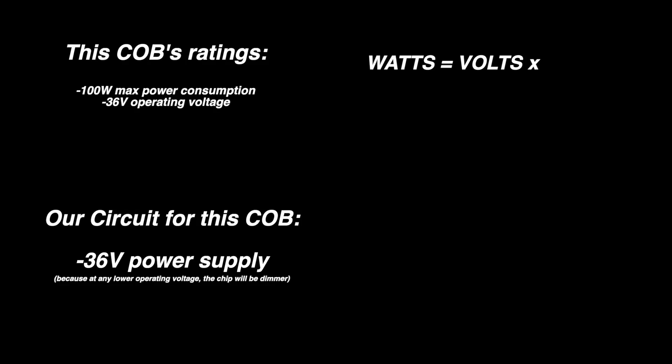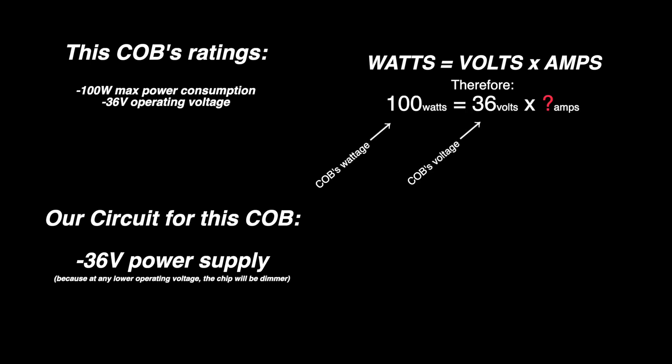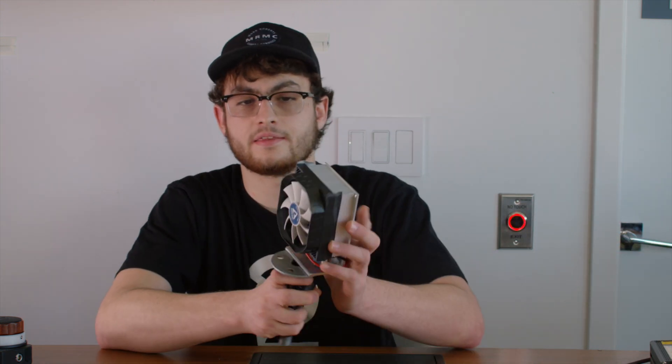So we've chosen our 36 volt power supply, but we need to make sure it can supply enough power for this 100 watt chip. Since we know watts equals amps times volts, we can do this by dividing the wattage of the COB by the 36 volts it needs to run on, and we get about 2.8 amps. So this COB will pull 2.8 amps at its max power. This power supply is rated for 3 amps — perfect.